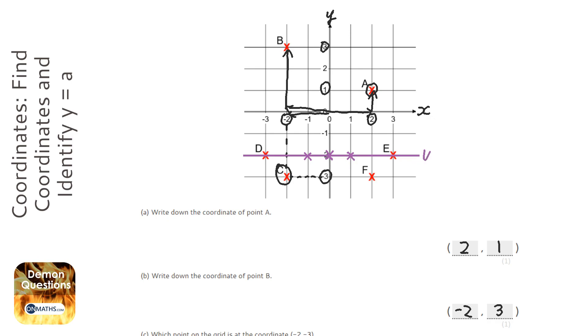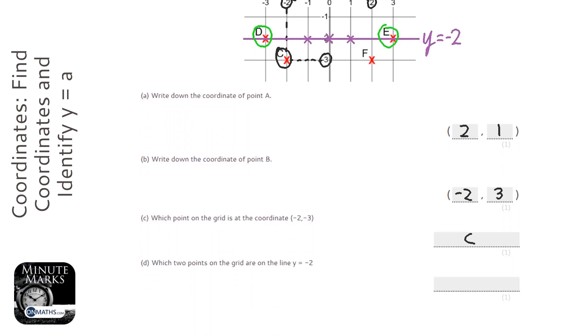We call that line y = -2 because y is always -2 along it. If you have a y equals line, it'll always go from left to right. If you have an x equals line, it'll always go from top to bottom. So the two coordinates on that line are D and E.